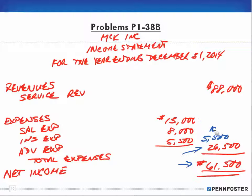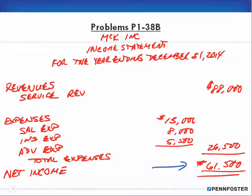That's the income statement, and we're moving on to the statement of retained earnings. Before I go, note that we created the income statement first because we need the sixty-one thousand five hundred dollars to put on the statement of retained earnings. If I tried to create the retained earnings statement first, I'd have to go back and do the income statement anyway, since I wouldn't know my profit or loss. I'll stop here and pick up with retained earnings in the next video.